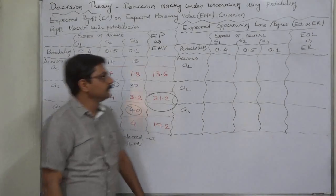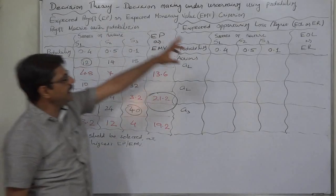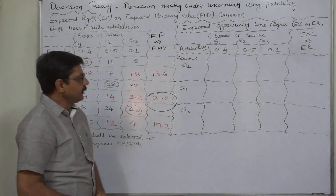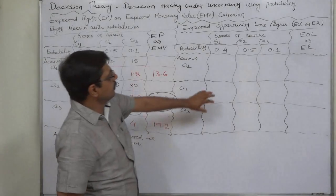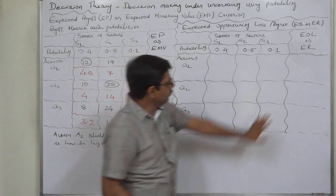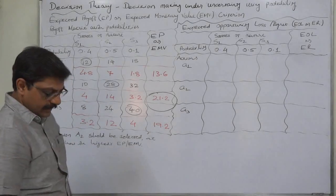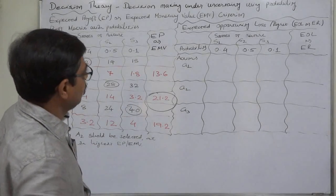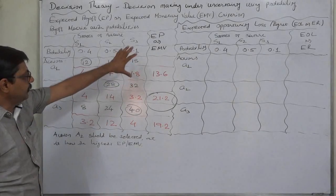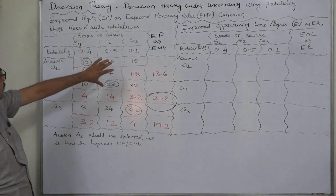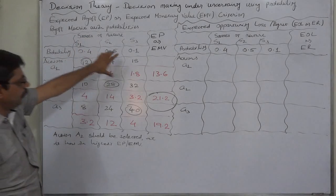Hello and welcome. Decision theory: decision making under uncertainty using probability. We have already discussed that probability of each and every state of nature can be found through various techniques, and they can be used to calculate expected payoff or expected monetary value by directly using the data of payoff.